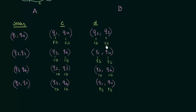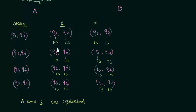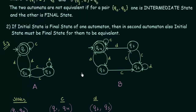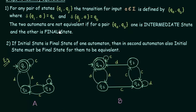For all the pairs checked, the transitions on inputs c and d always yielded pairs that were both final states or both intermediate states — never one of each. Therefore we can confirm that automata A and B are equivalent. If at any point one state in a pair is a final state and the other is an intermediate state, you can stop and confirm they are not equivalent. I hope this is clear; see you in the next lecture with another example.